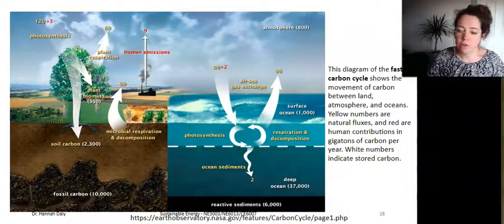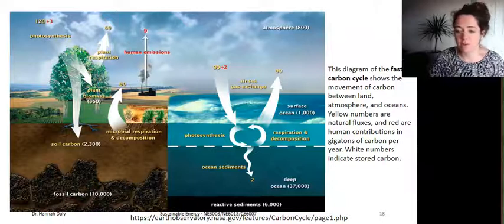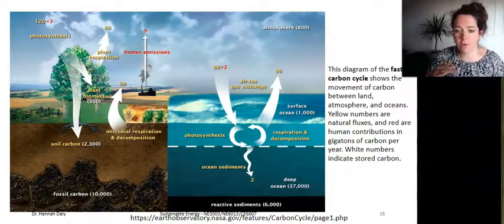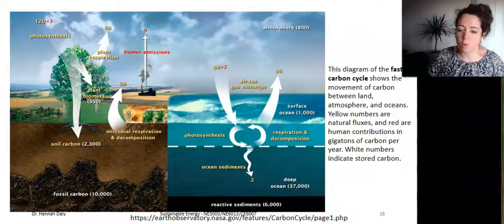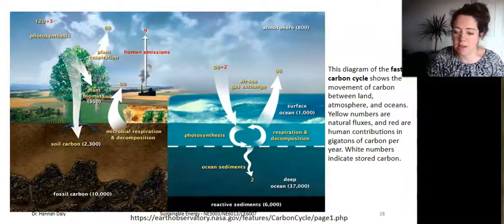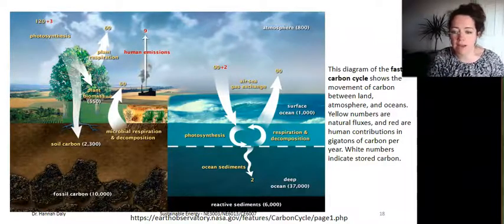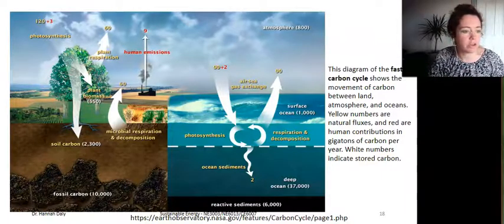For short time periods, tens to hundreds of thousands of years, the temperature of the Earth can vary significantly. In fact, the Earth does swing between ice ages and warmer interglacial periods on these timescales. Parts of the carbon cycle can amplify these short-term temperature changes.